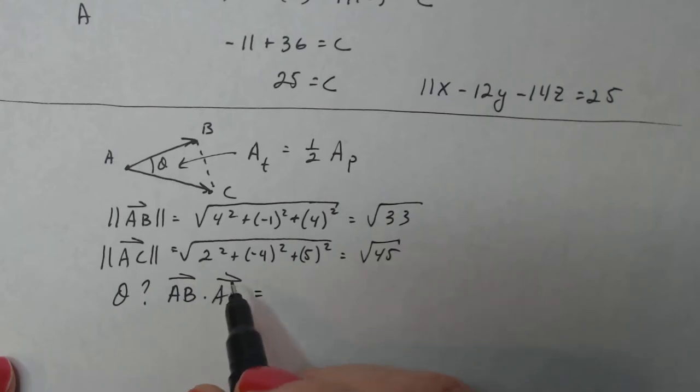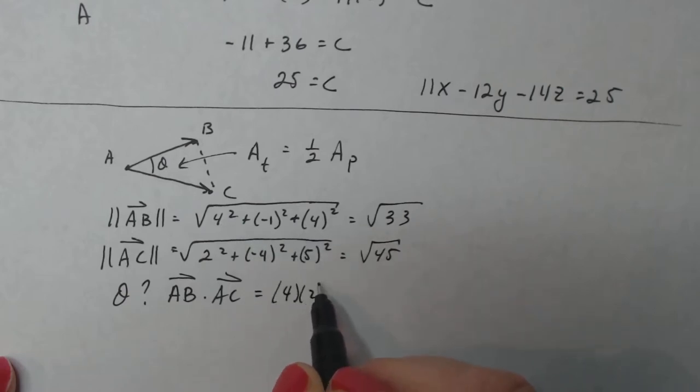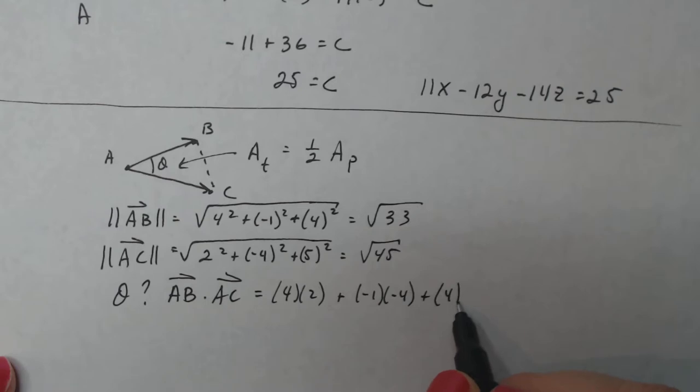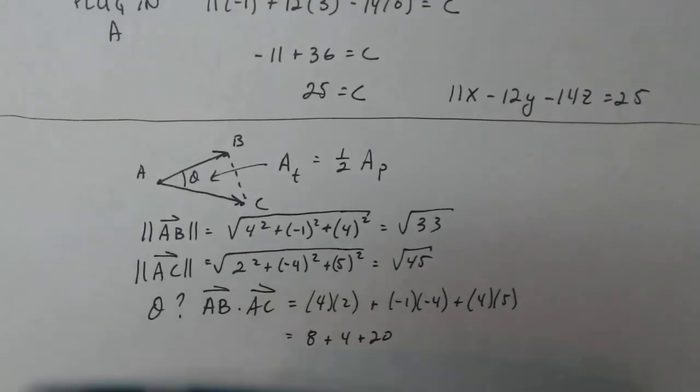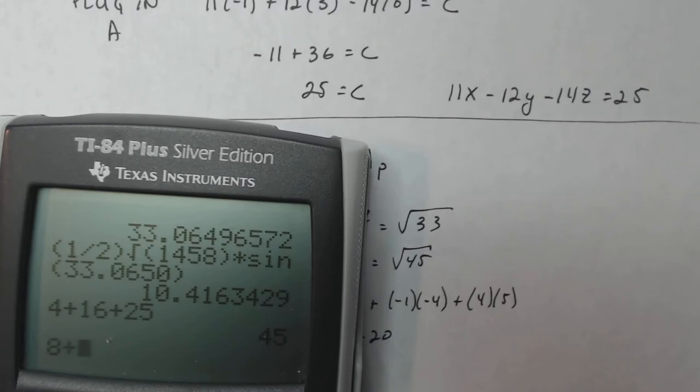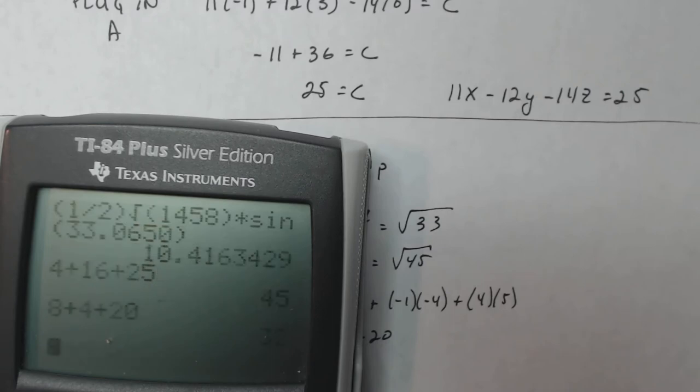And then I want to get my dot product here. AB dot AC. 4 times 2 plus negative 1 times negative 4 plus 4 times 5. That's my dot product. That's going to be 8 plus 4 plus 20, which equals 32.